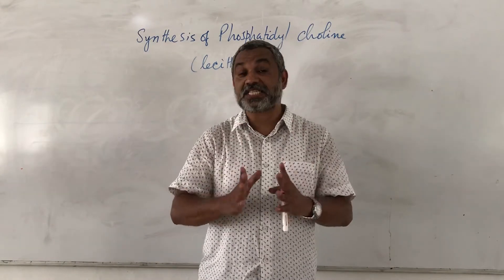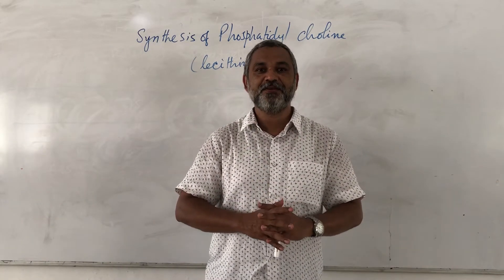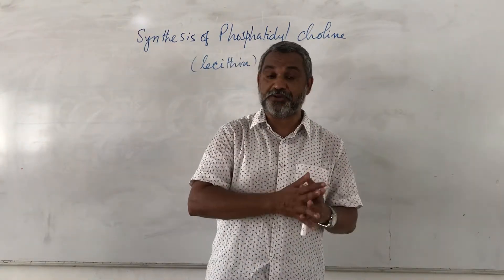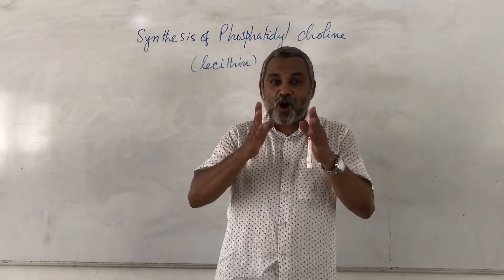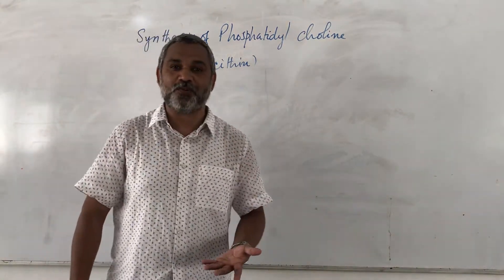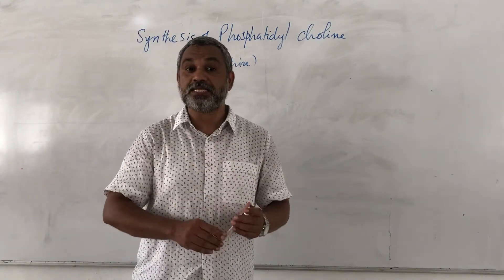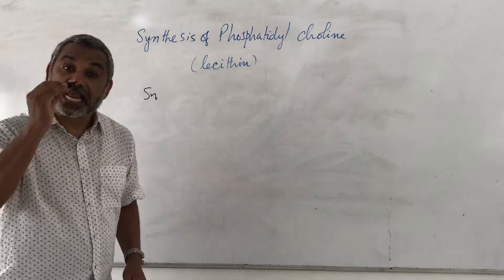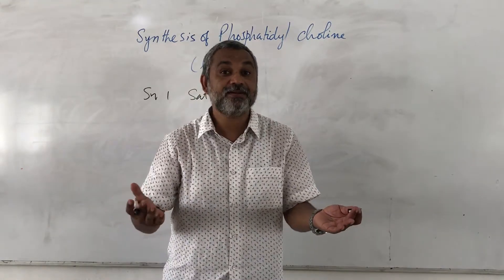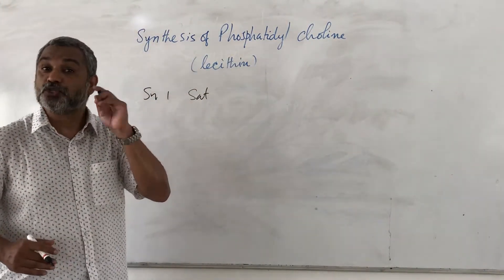We are dealing with a very interesting aspect of lipid metabolism — phospholipid metabolism. We have dealt elaborately with the synthesis of phosphatidylethanolamine in a previous video, so in this video we are going to look at how exactly phosphatidylcholine is synthesized. Phosphatidylcholine is also known by the name lecithin. What is peculiar about phosphatidylcholine is that at the SN1 position it will have a saturated fatty acid — palmitic acid, stearic acid, etc.